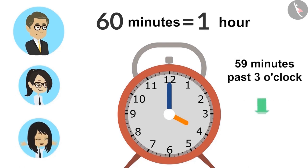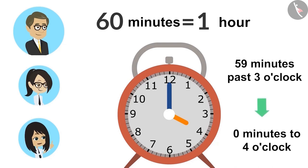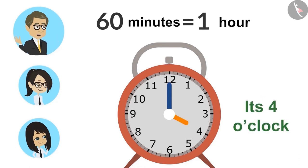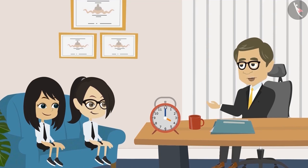After 59 minutes past 3 o'clock, it is better to say 0 minutes to 4 o'clock. Absolutely right, Neha. Or we can say, it's 4 o'clock. If the minute is 0, then it is not necessary to say it.